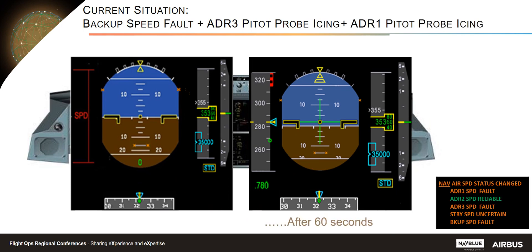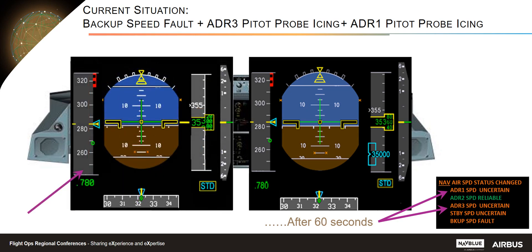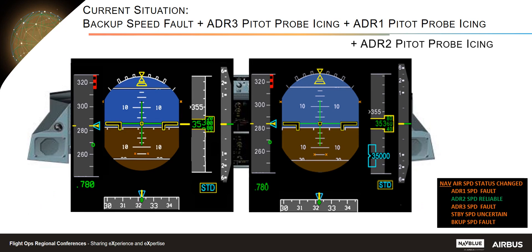Let's focus on this 60-second confirmation time. Since ADR1 and ADR3 are declared faulty by comparison and consolidation with backup speed, their status changes to 'uncertain.' As long as backup speed is faulty, no faulty ADR speed can be displayed as reliable on the speed scale. So instead of being flagged, PFD1 recovers data from ADR1 to use available data. If ADR1 becomes consistent with ADR2, data may be used by the flight crew. Then ADR2 speed also faults, and a new ECAM alert — 'NAV Speed Uncertain' — is triggered. In such a case, the unreliable airspeed indication procedure must be applied.